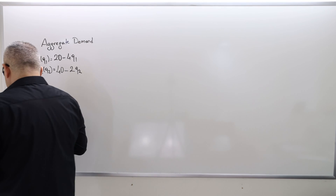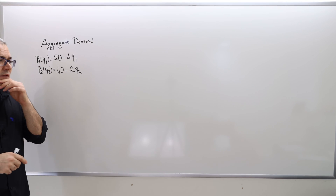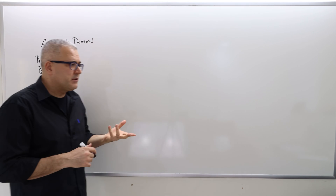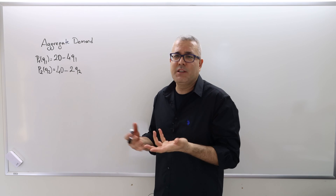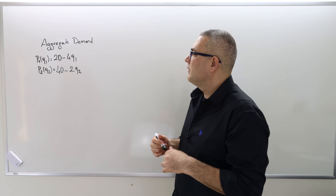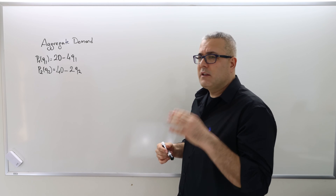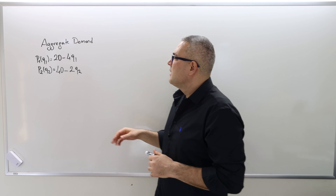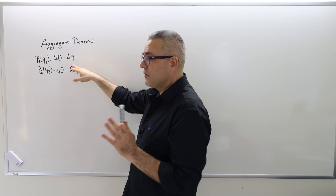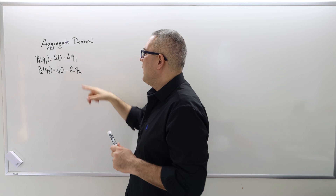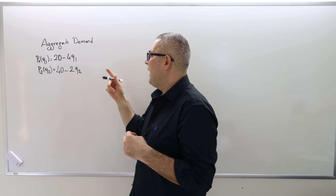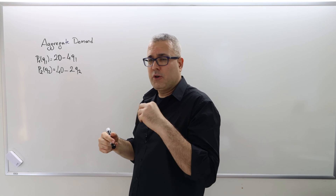Instead of the previous example, I decided to use two new inverse demand curves, because I just wanted to work with integer values. So here is the inverse demand curve for group one and the inverse demand curve for group two. In order to find the aggregate demand, we first have to find the individual demand curves.